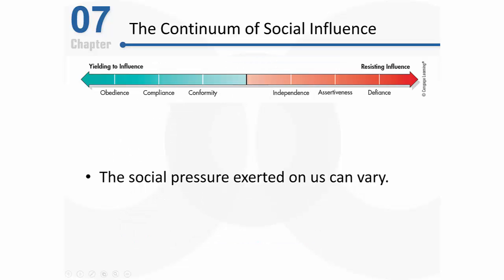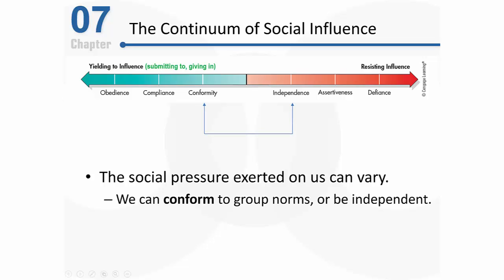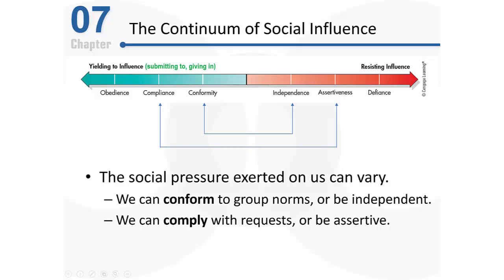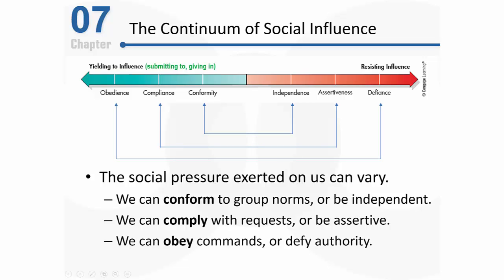On the continuum of social influence, the pressure exerted on us in any social situation can vary. Sometimes we might resist that influence and sometimes we might yield to it — yielding simply means submitting or giving in to social influence. This is where the three key terms come into play: we can conform to group norms or be independent, comply with specific requests or be assertive, and obey the commands of an authority figure or defy that authority figure.